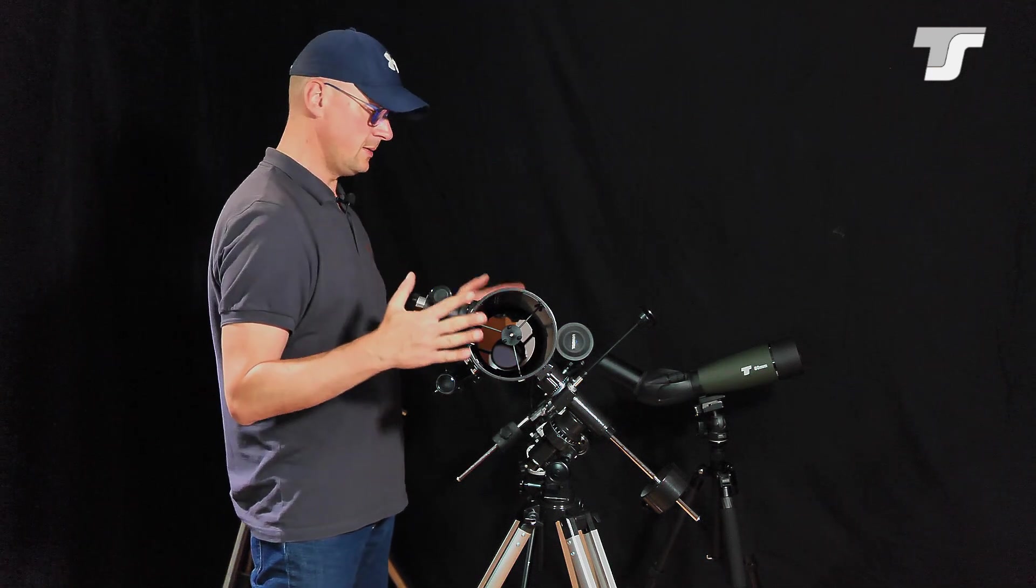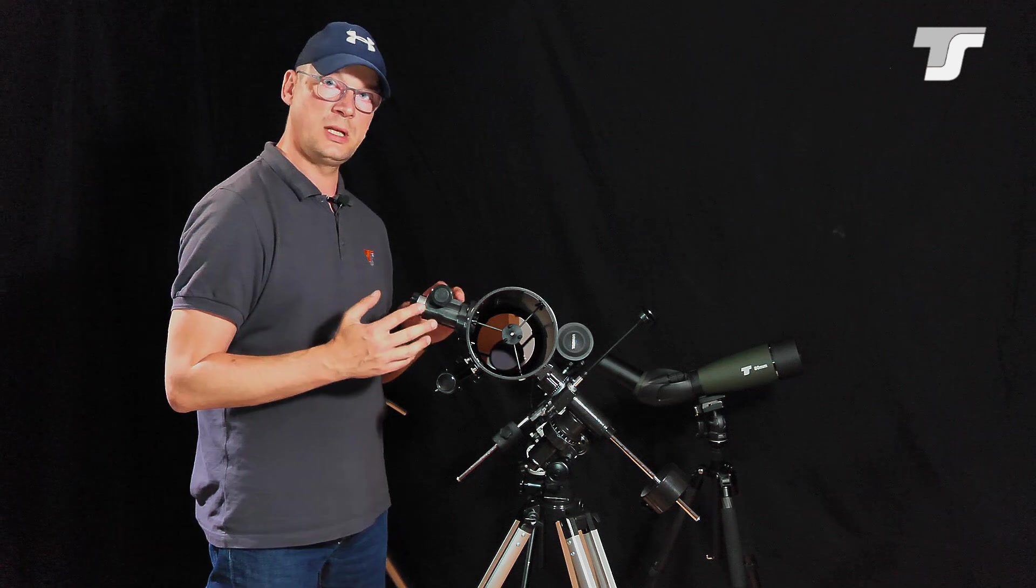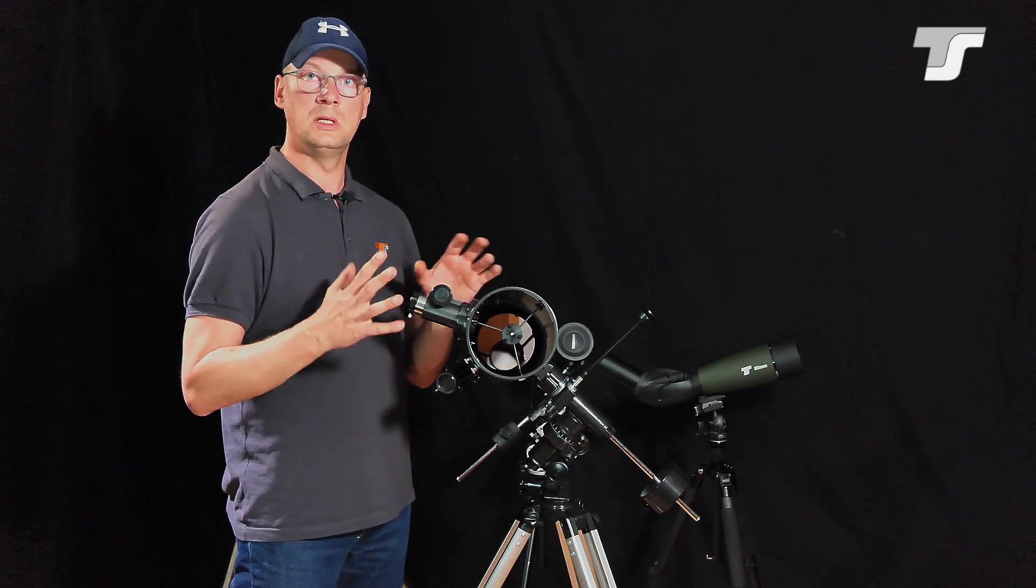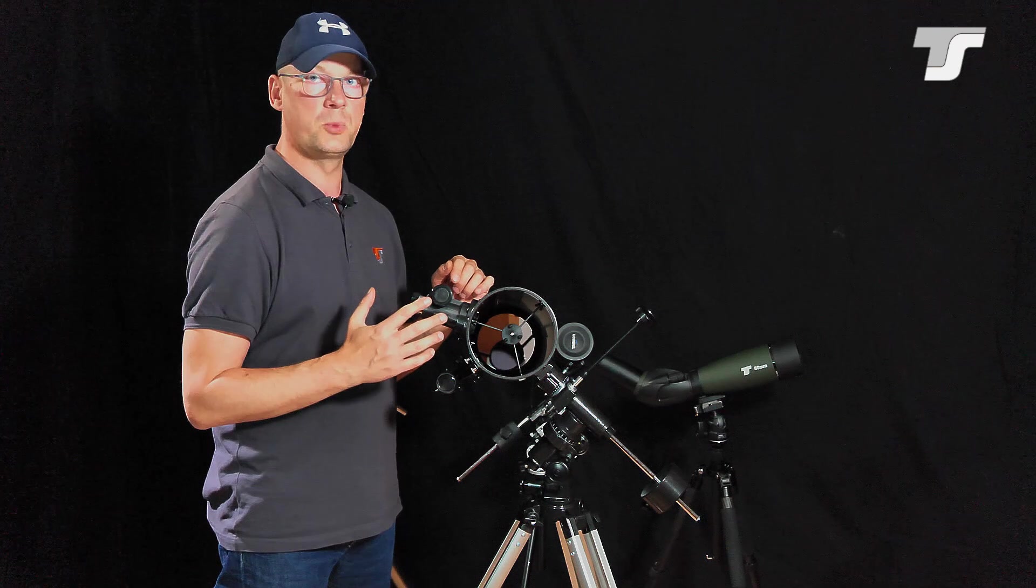With this adjustment, so-called collimation, you ensure that all the light comes into your eyepiece and you use the full potential of the telescope.